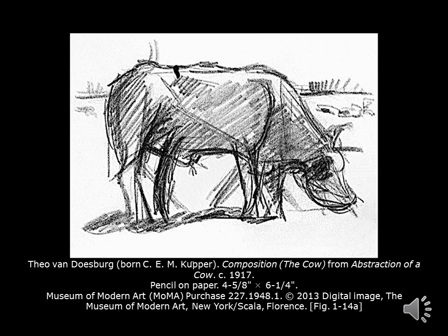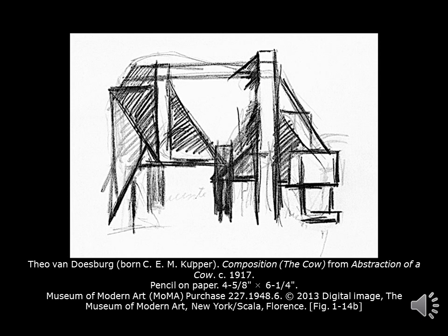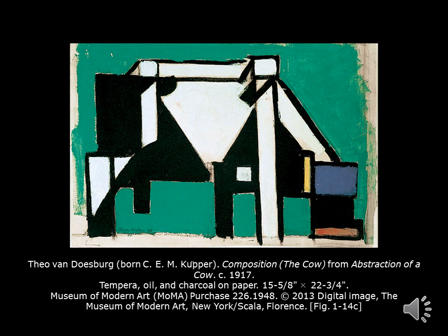The next few examples from Theo van Doesburg really drive the idea of abstraction home. We start with a loose gestural drawing — an abstraction of a cow — with some subdividing of sections with geometric shapes. You can see how van Doesburg took those basic sketchy elements and started refining everything, using shading to define value. In the next version, van Doesburg pushes the abstraction further by adding color and refining the shapes, making it more refined with paint.